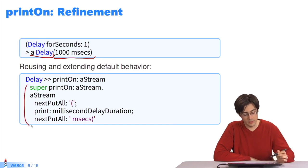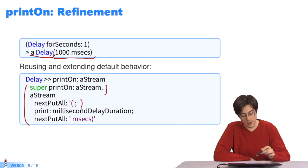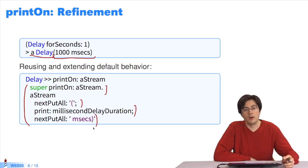This is exactly what the printOn method does. It starts by asking the superclass for the default printString. Afterwards, it opens a parentheses with a preset number of milliseconds, and then it closes the parentheses.